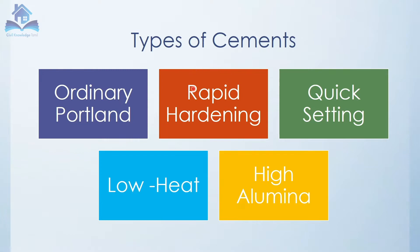Rapid Hardening is a specialty cement. Ordinary Portland Cement achieves its full strength in 28 days, but with Rapid Hardening cement, you can achieve that strength earlier. It can be used for high structures.